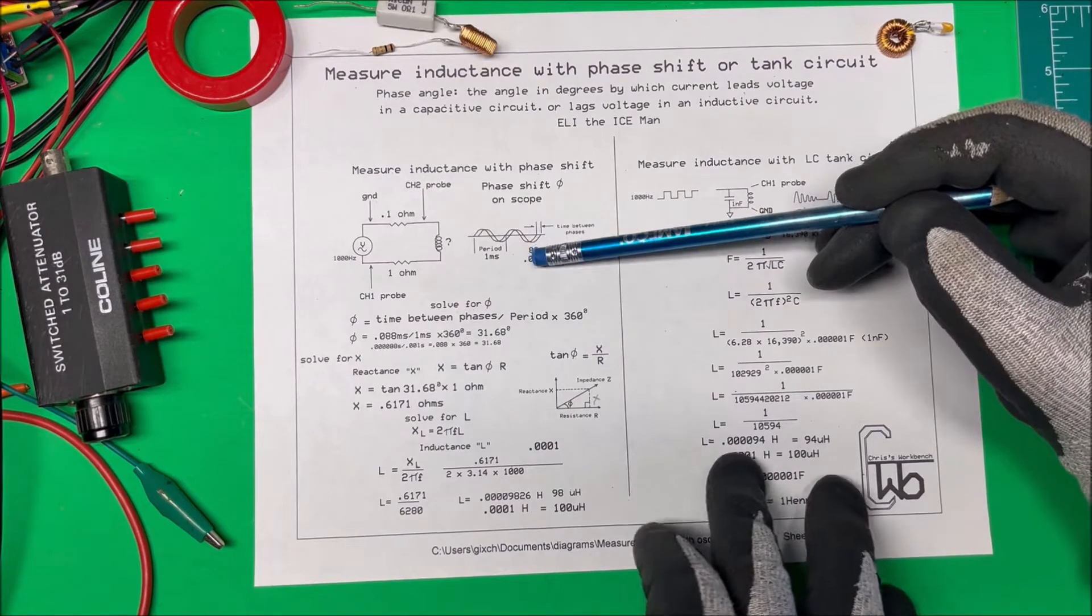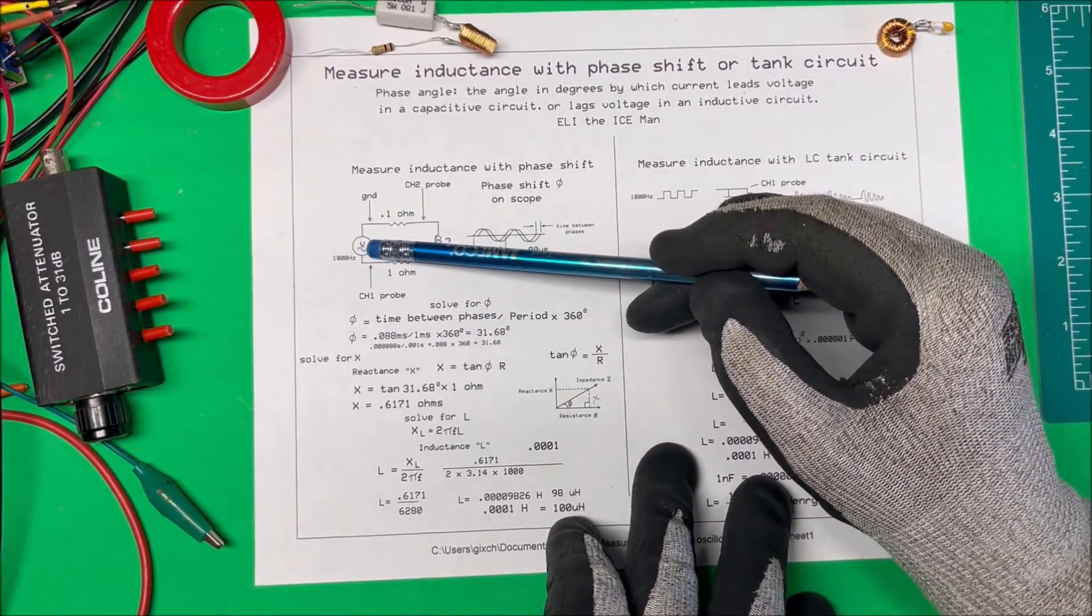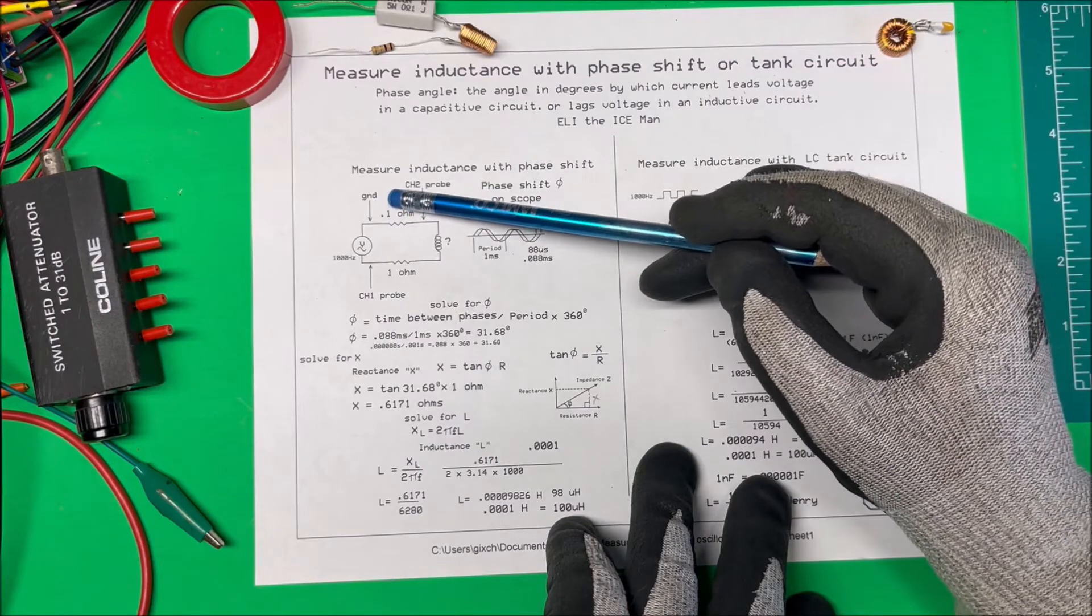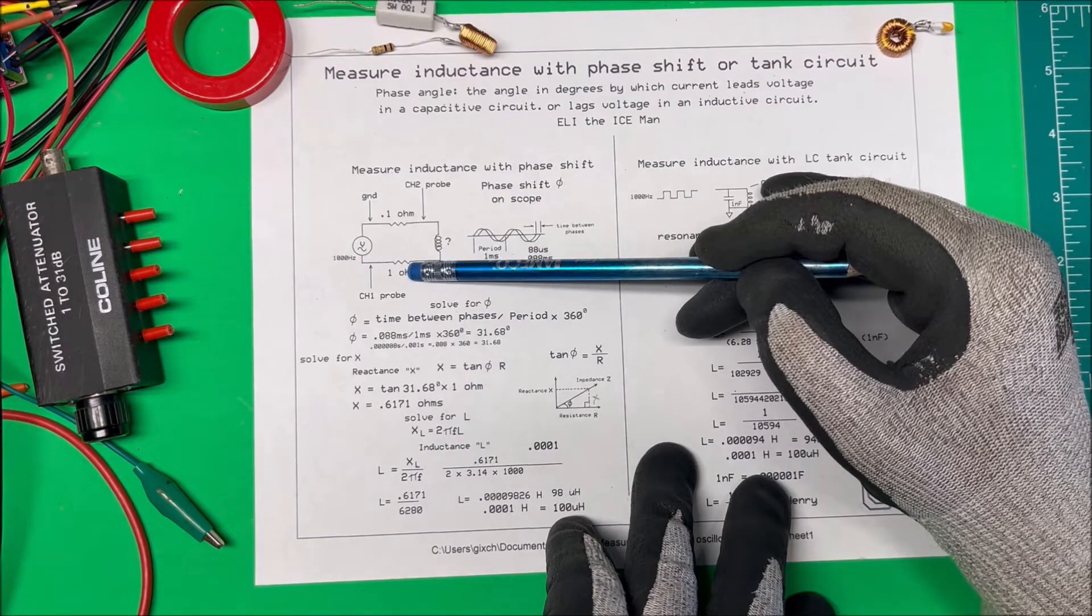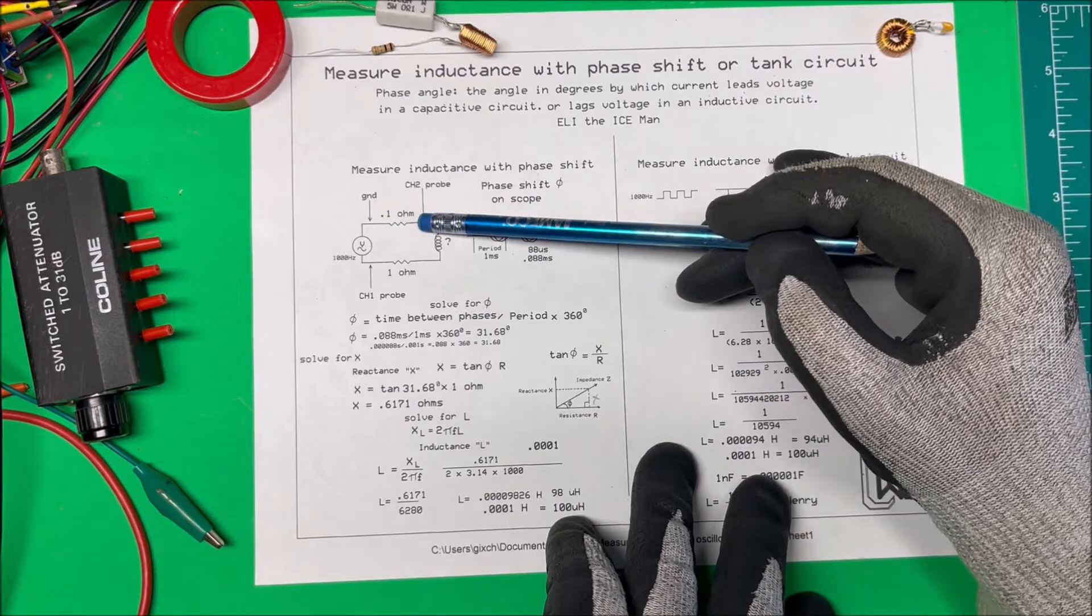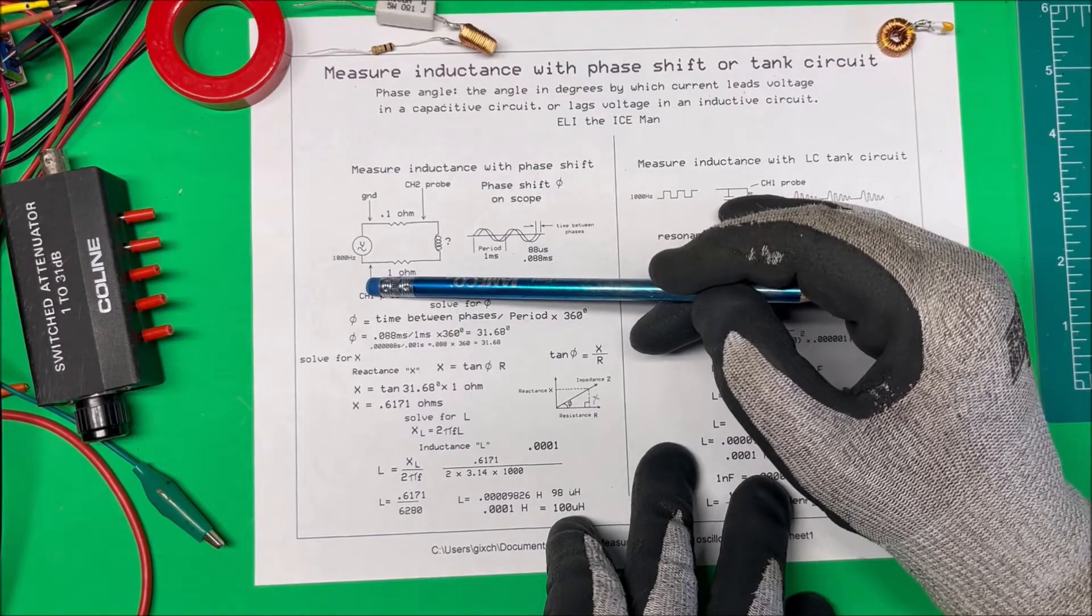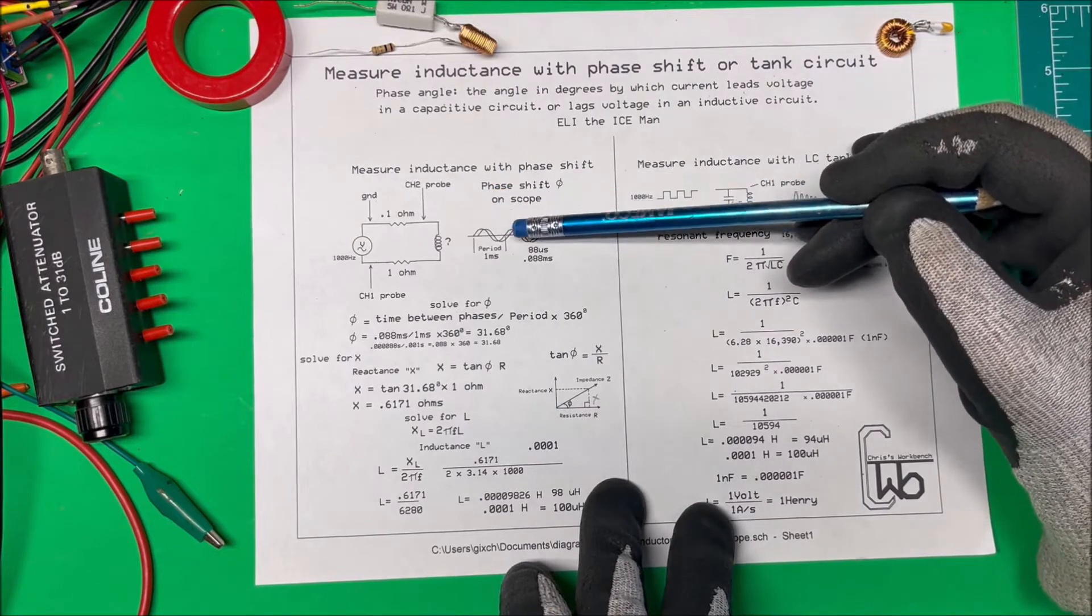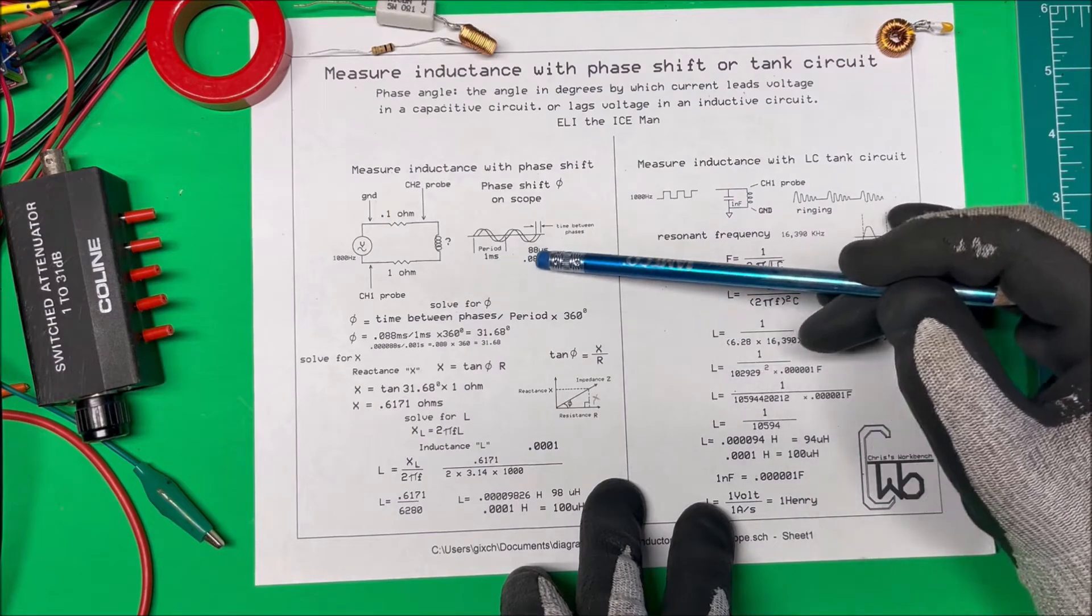Here's the setup I used. I have a function generator putting out a thousand Hertz sine wave in series with a 0.1 ohm resistor, my unknown inductor, and then a 1 ohm resistor. I'm putting the ground probe here and one probe across the 0.1 ohm resistor to give me my current sine wave, and the other probe is going to give me my voltage across the inductor.